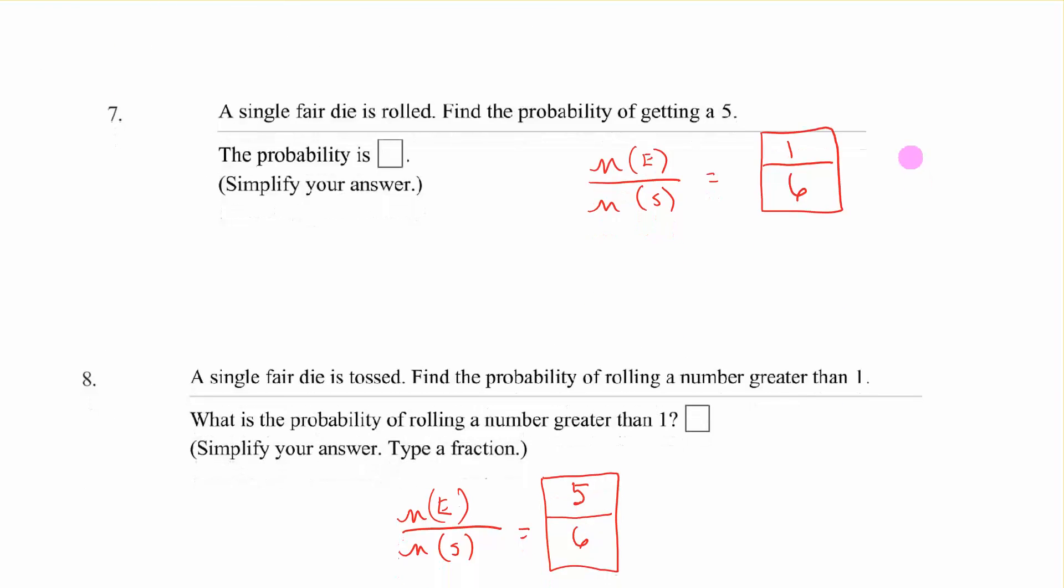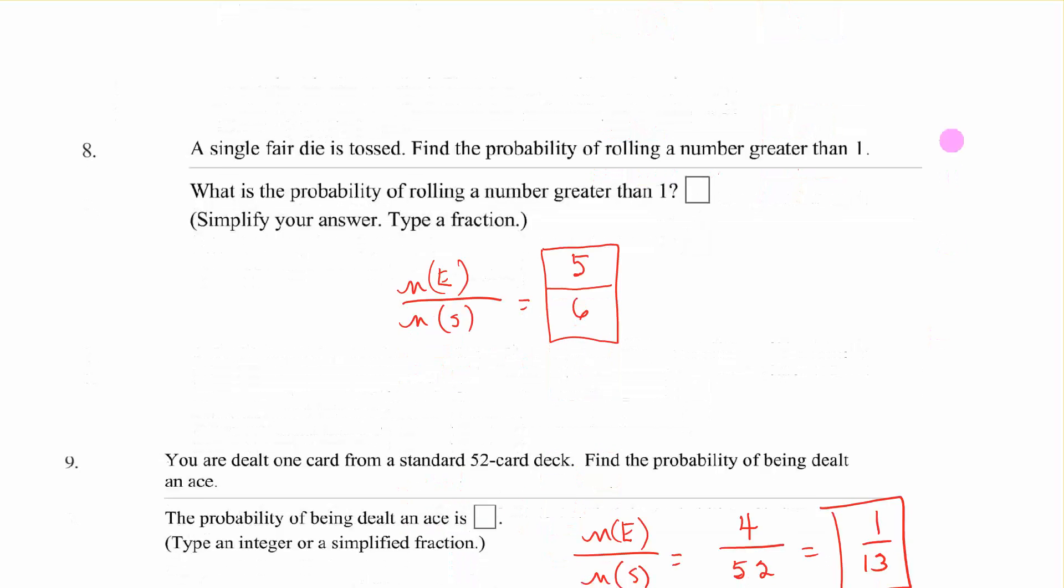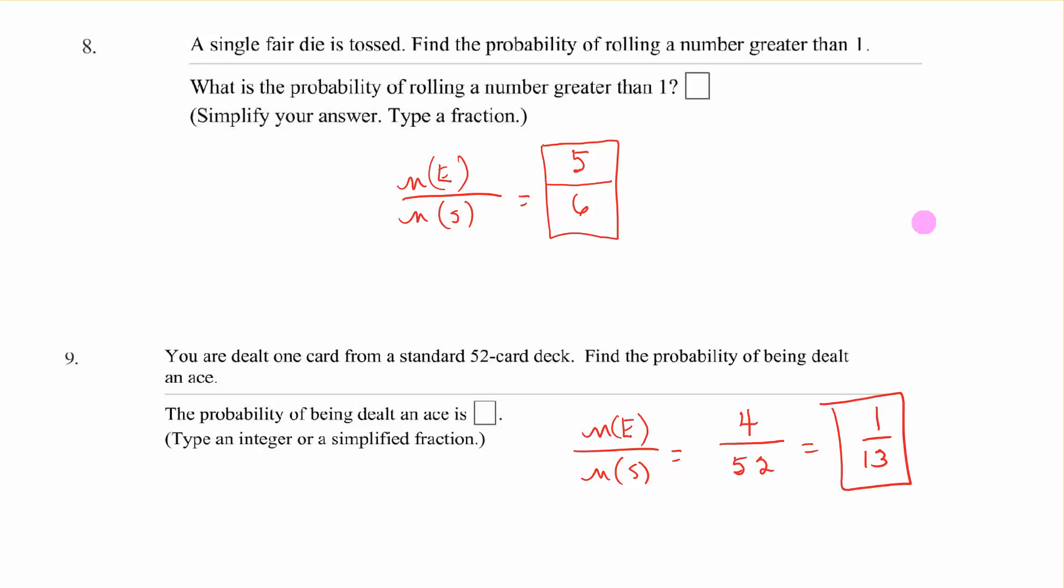Now we're going to use our probability rule. A single fair die is rolled. Find the probability of getting a 5. The number of that event, the number of 5s on a die, that's 1. The sample space, that's 6, so 1 out of 6. Number 8: single fair die is tossed. Find the probability of rolling a number greater than 1. How many numbers on the die are greater than 1? There's 5. The number total on the die is 6, so 5 out of 6 gives you that probability.